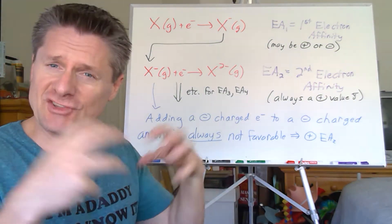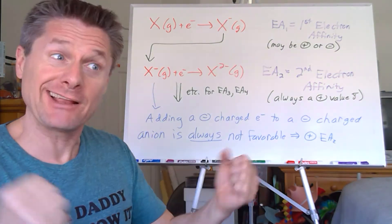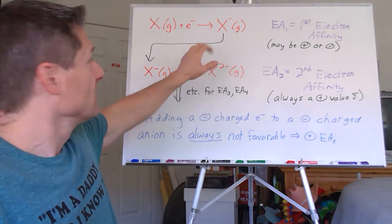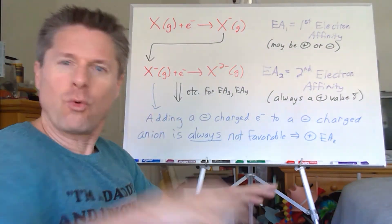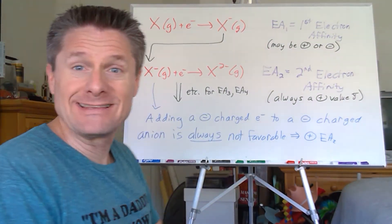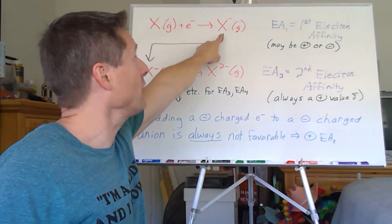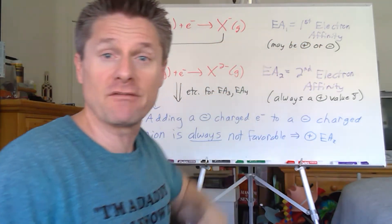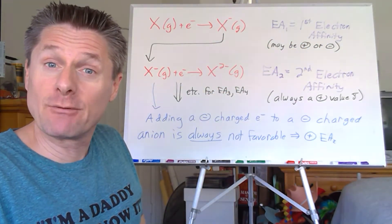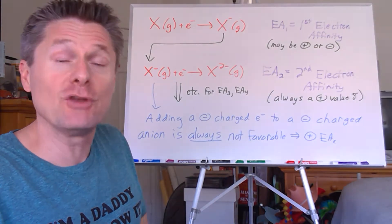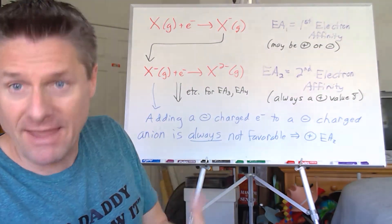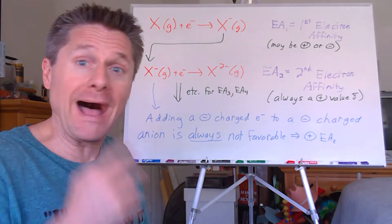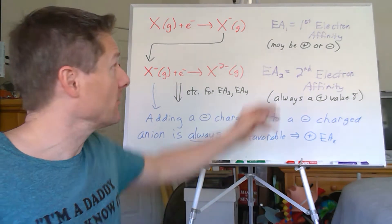But when you're adding electrons, it's different. There's still electrostatic considerations — like charges repel, opposite charges attract. So we're cramming electrons in now. If you cram that first one in to get the first electron affinity, based on the electron configuration change, it could be favorable — exothermic negative — or not favorable, positive endothermic.